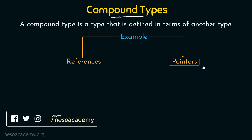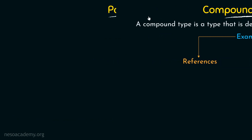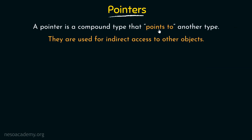We will see what are pointers, what they are used for, how they are different from references and how they work. A pointer is a compound type that points to another type. From the name itself we can understand pointer — it is going to point to another type. They are used for indirect access to other objects. So far from these definitions, it looks a little bit similar to references.